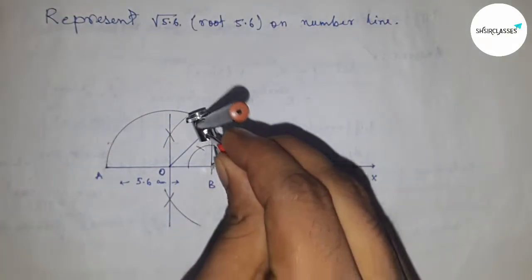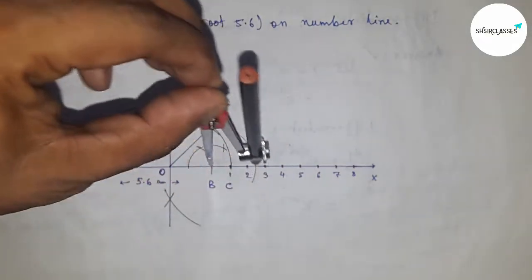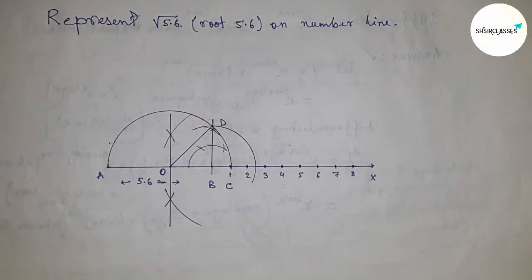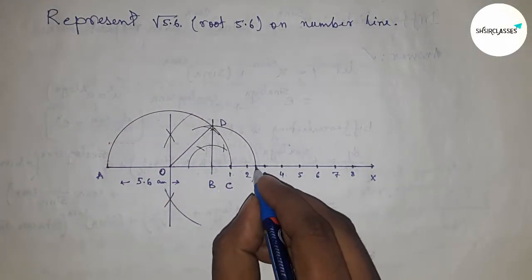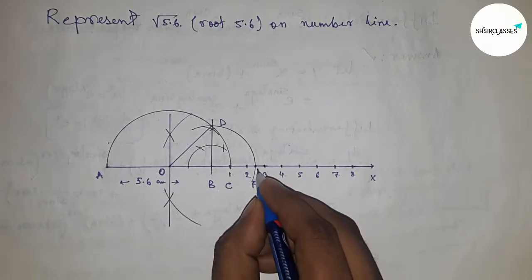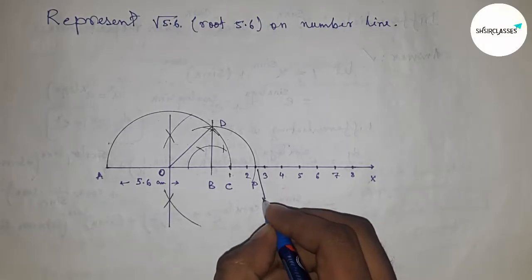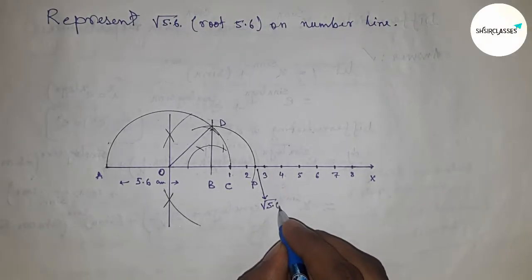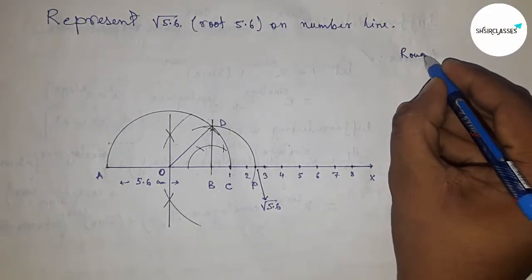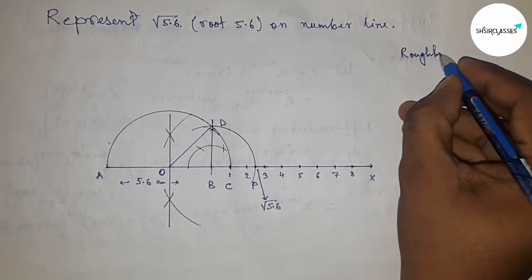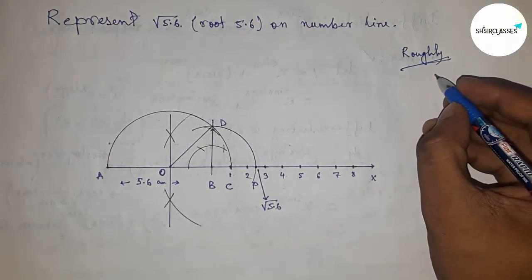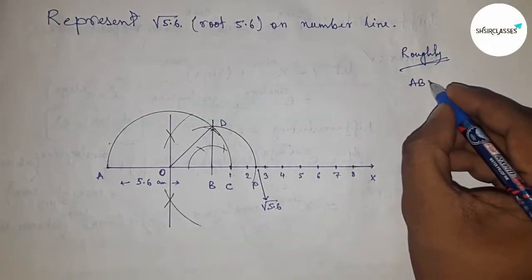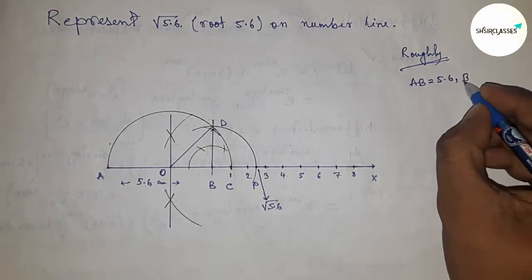Now BD is the radius. Take the length BD by compass and draw an arc which cuts the number line at point P. This point P is the representation of root 5.6 on the number line.